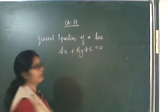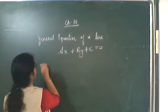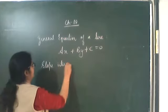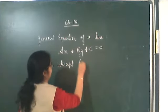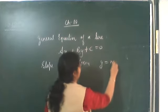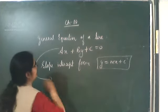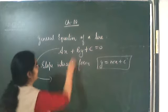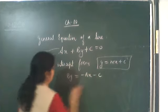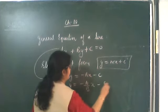Now if we have to convert this general equation of a line into slope-intercept form — the slope-intercept form is y equals mx plus c — we convert it to get y equal to minus a by b times x, minus c by b.